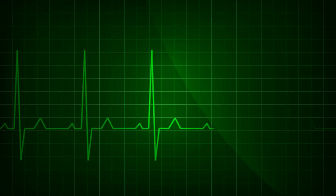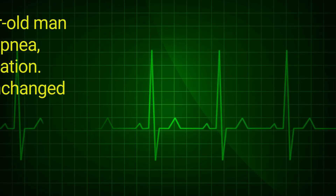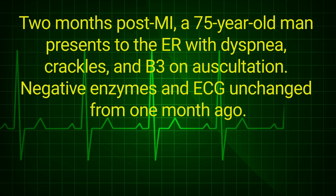The next case involves a patient who experienced an acute myocardial infarction two months ago. The patient is 75 years old and arrived at the emergency room with dyspnea and crackles on auscultation, accompanied by a third heart sound, or S3. Blood tests were performed to assess cardiac enzymes, which came back negative. An electrocardiogram was also conducted. The current ECG appears unchanged compared to the one taken a month ago, meaning the patient had a heart attack two months ago, underwent an ECG a month ago, and has now arrived at the emergency room with shortness of breath and signs of pulmonary congestion.